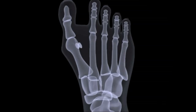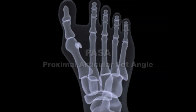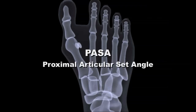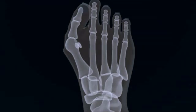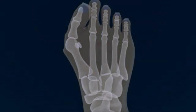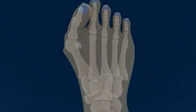In some cases, the proximal articular set angle at the head of the first metatarsal may be offset. This PASA is one of the factors which demonstrates the position of the proximal phalanx on the metatarsal during movement as well as at rest.